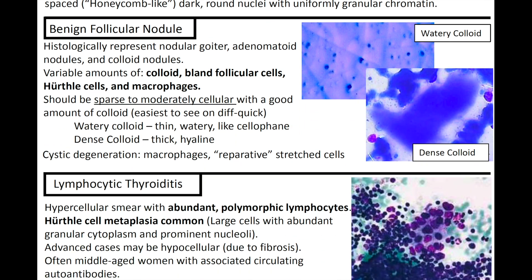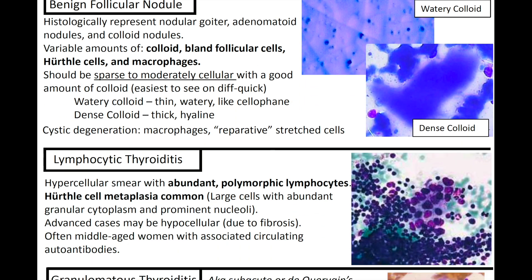Next up, we've got benign follicular nodule, now known as follicular nodular disease or FND. FND, as the name would suggest, is a benign process. Histologically, it can represent a nodular goiter, adenomatoid nodules, and colloid nodules. There can be variable amounts of colloid, bland follicular cells, Hürthle cells, and macrophages. There should be sparse to moderate cellularity with a good amount of colloid, which is easiest to see on Diff-Quik.